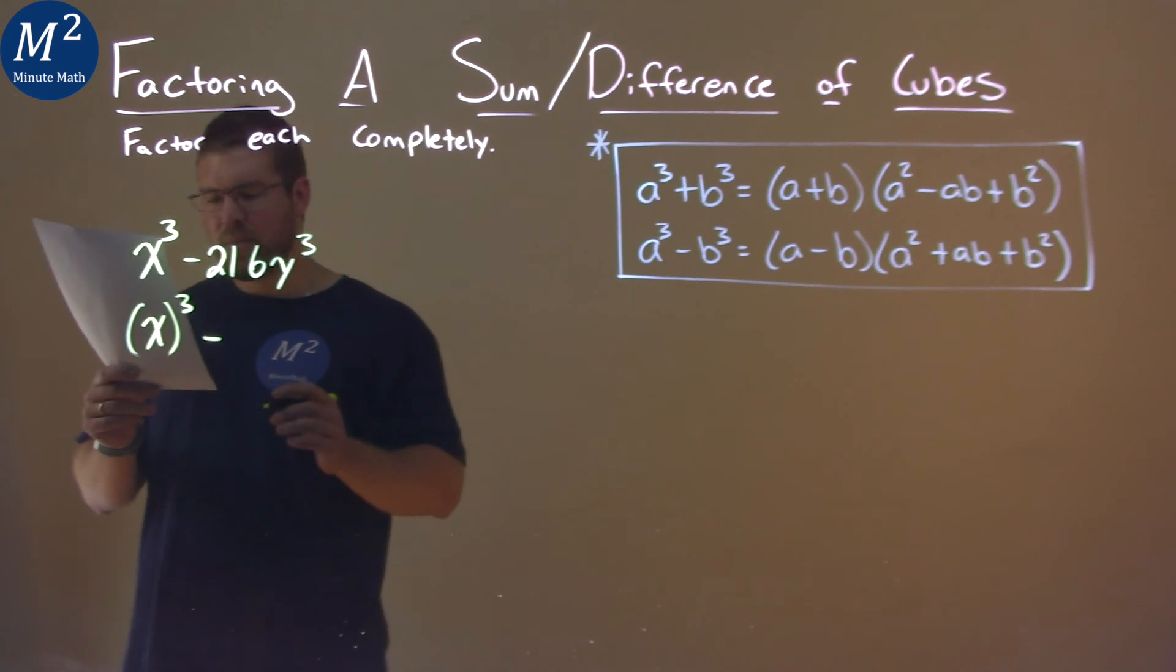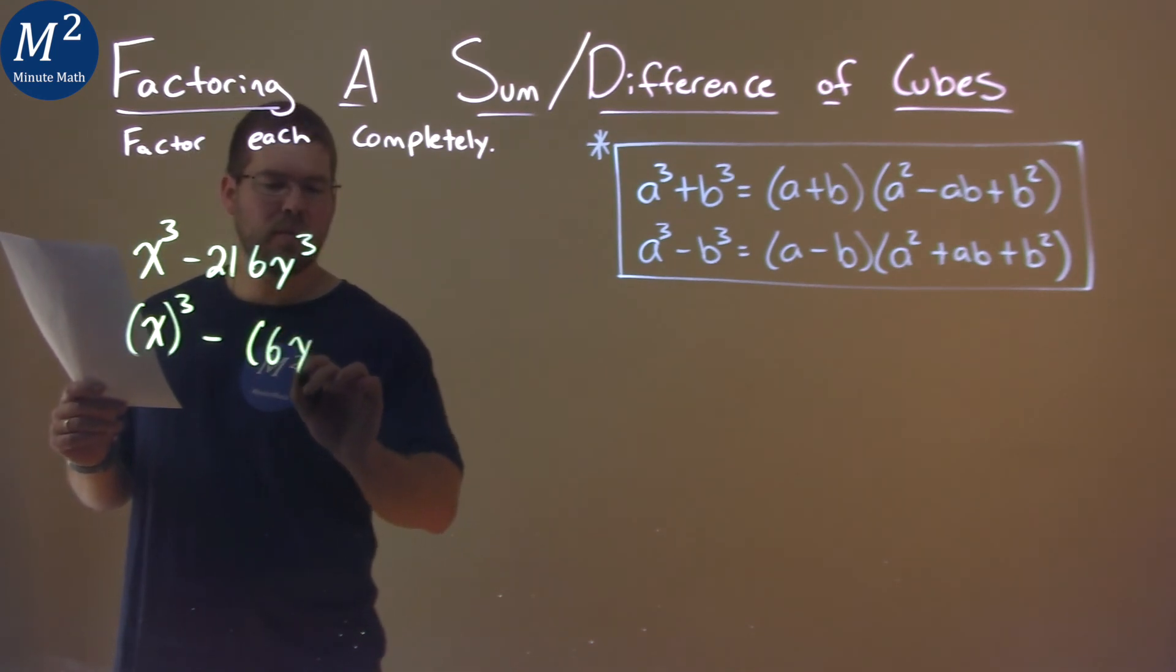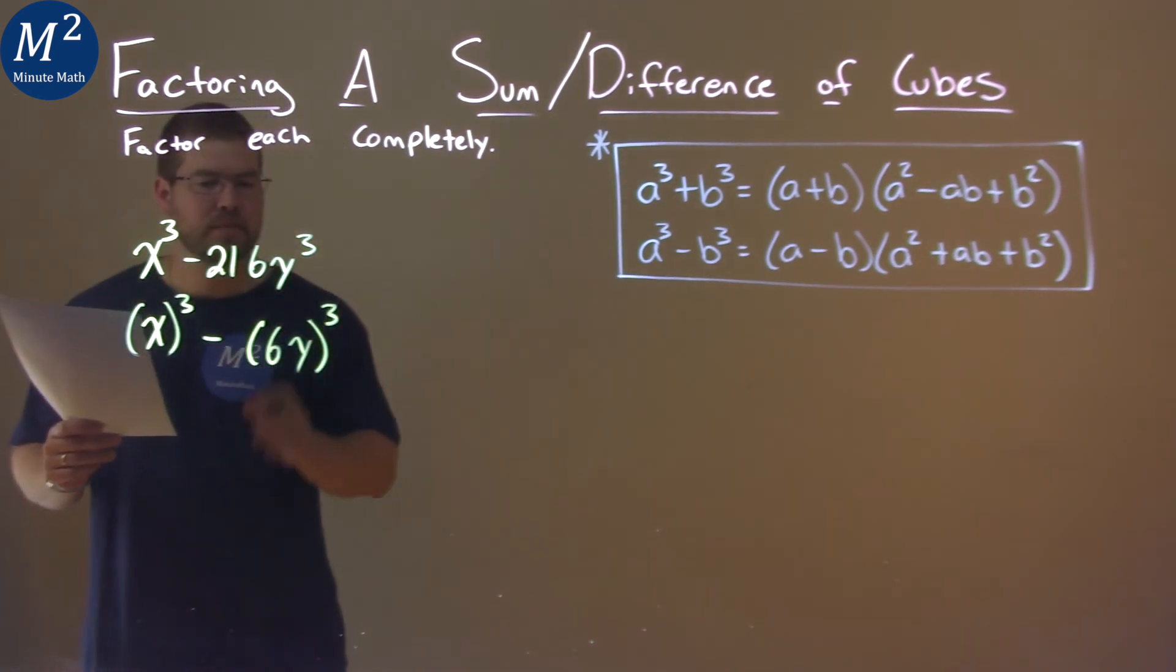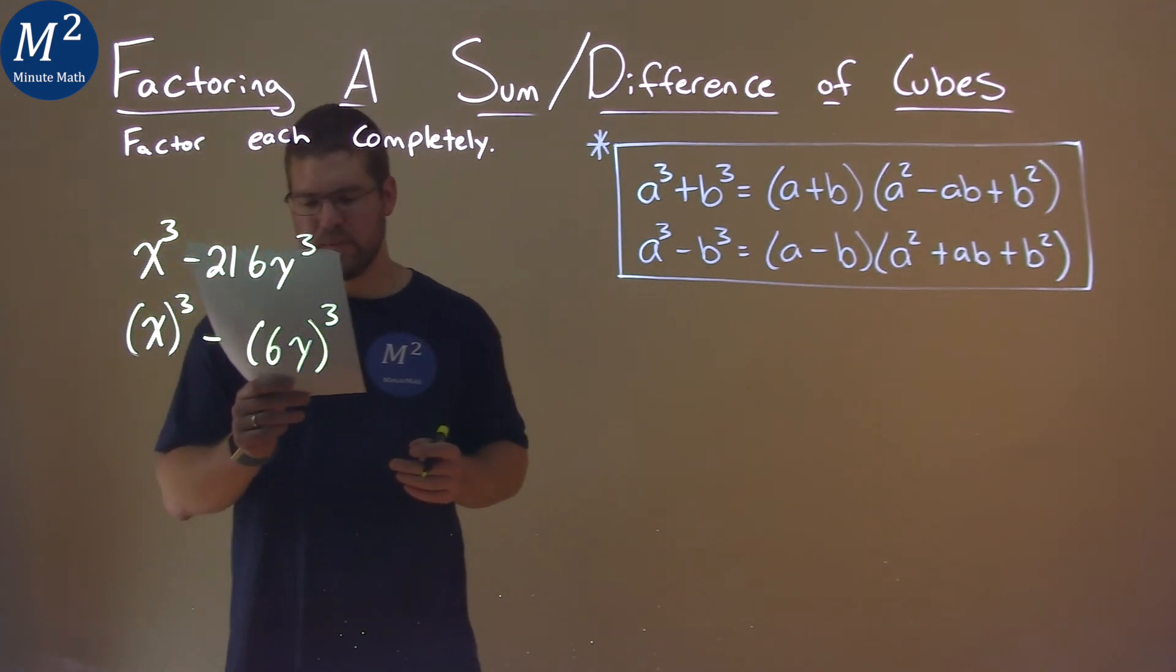216 is the same thing as 6 cubed. So if we have a 6 here, and then the y, and we cube it, 6y all cubed is 216y cubed.